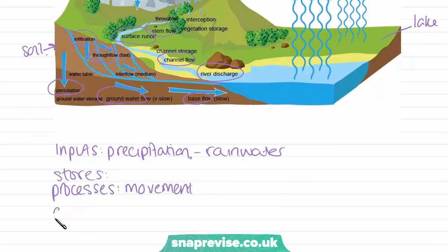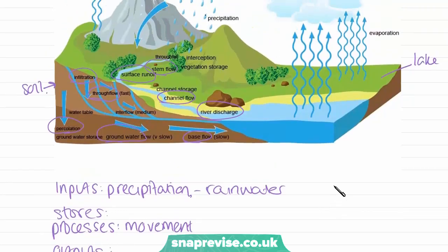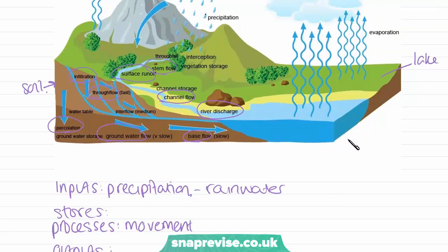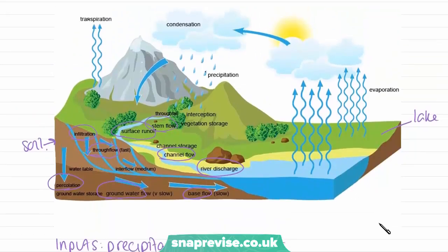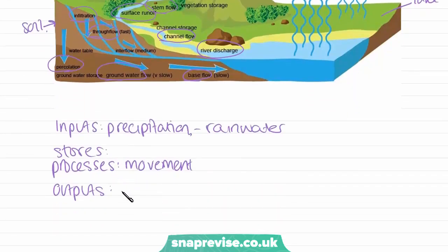Finally, we have the outputs of our drainage basin system. This is when the water has finally reached the sea or a lake. The outputs are evaporation and transpiration. Transpiration is when water evaporates straight from plants back into the atmosphere. Both outputs involve water turning from a liquid back into a gas and returning to the atmosphere.